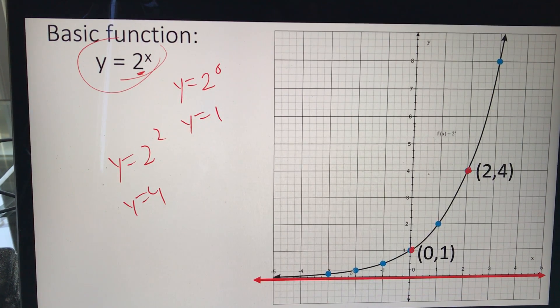This bottom line here is called the asymptote. It's the line that the function tries to hit but never quite reaches.